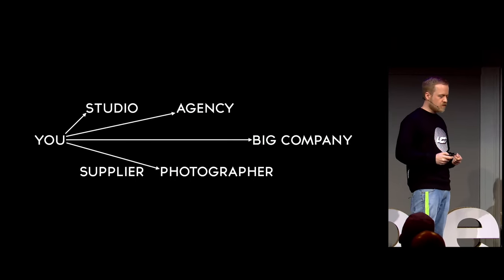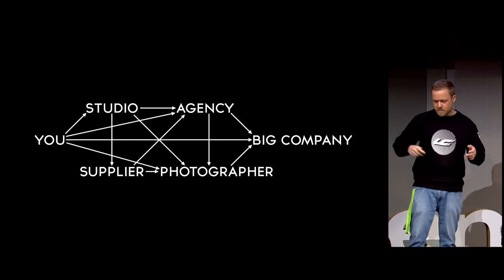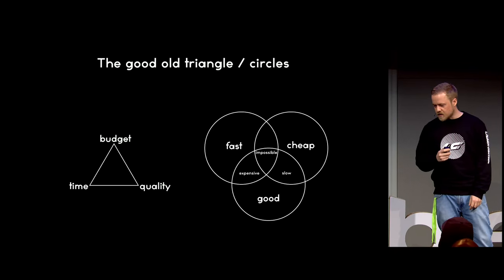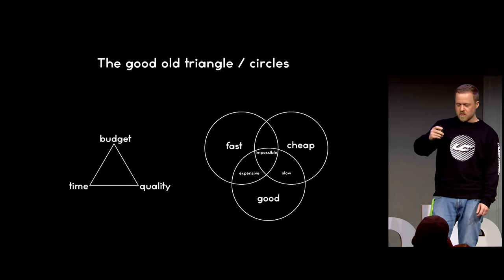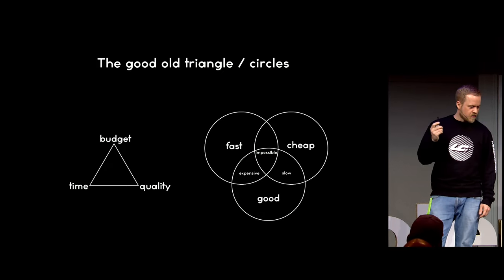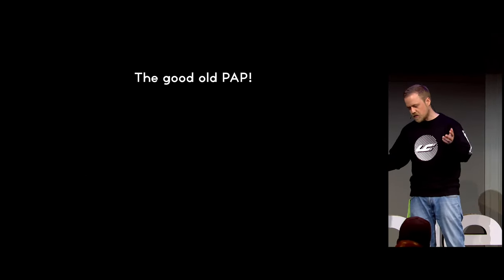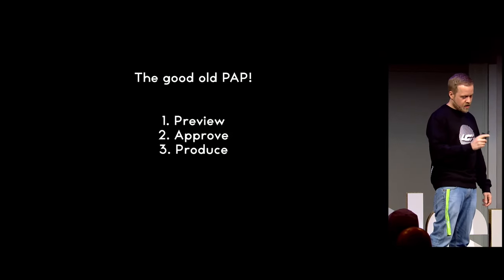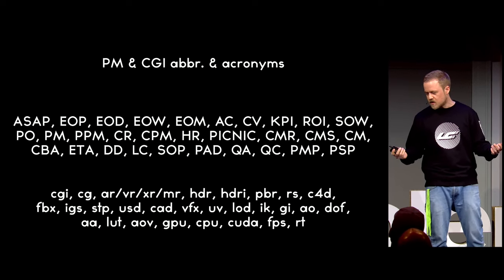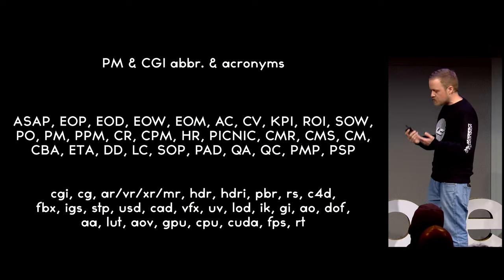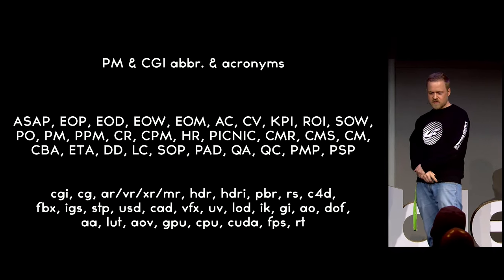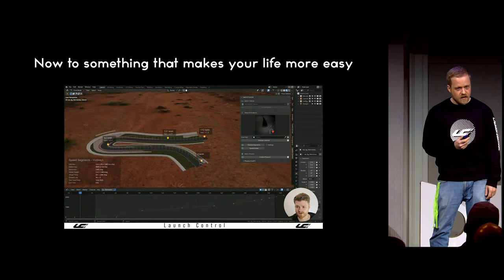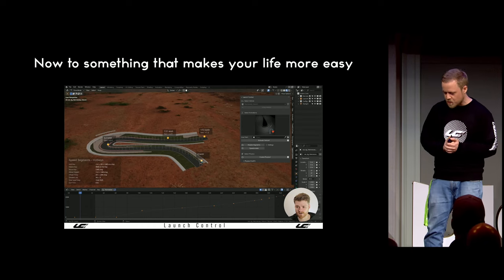These people are talking with each other — they have to. The supplier needs to give something to the photographer and back and forth, and everything gets a big spider web and you get tangled up. It makes things very complicated. And the good old PAP — Preview, Approve, and Produce — not the other way around. In project management I'm confronted with it all the time. People throw around abbreviations all the time and it makes our life very complicated. And now to something which is not complicated and makes your life easier — which is Daniel with Launch Control. Thank you for listening to my part.